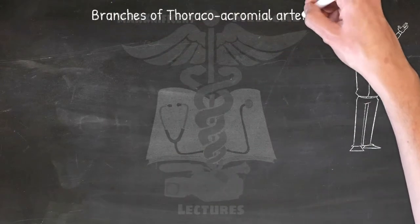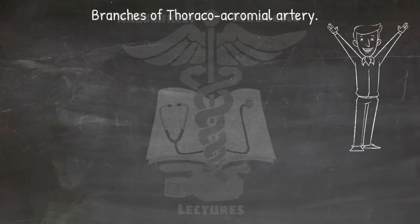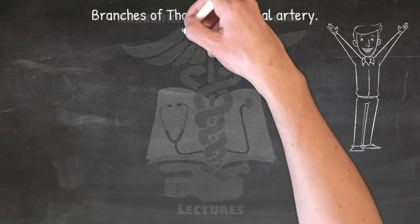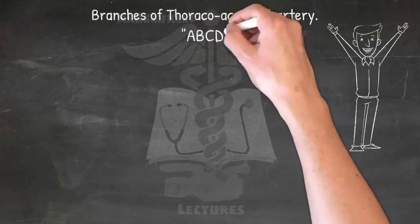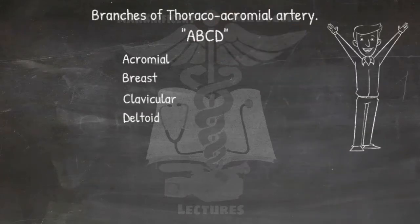For the branches of the thoracoacromial artery, this should be as easy as A, B, C, D: acromial, breast (that is pectoral), clavicular, and deltoid.